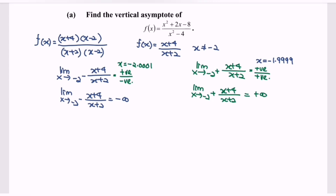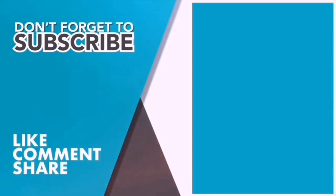So as a conclusion, the vertical asymptote is x = -2. Thank you so much for watching this video. If you think the video is useful, kindly consider to like, comment, share, and subscribe.